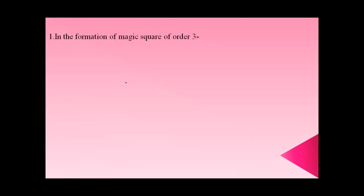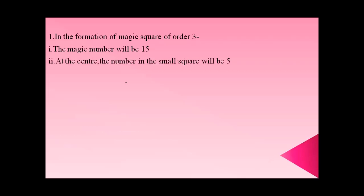Question one: In the formation of a magic square of order three, the magic number will be 15, the number at the center small square will be 5, and the integers used are 1 to 9. A magic square of order three means a 3×3 grid — three into three — giving nine small squares.